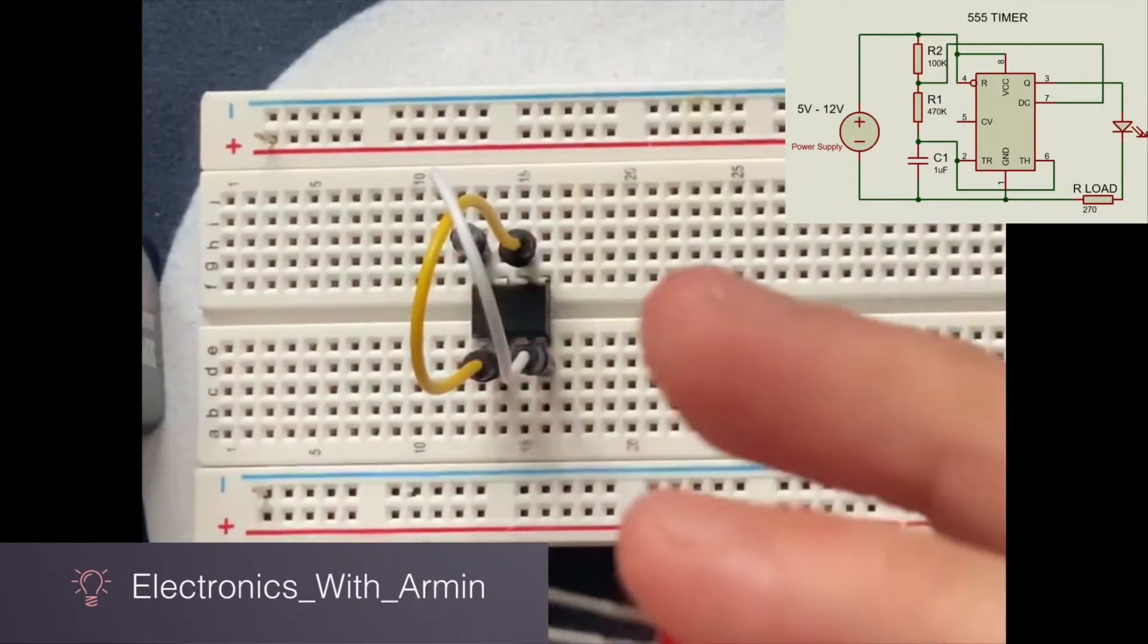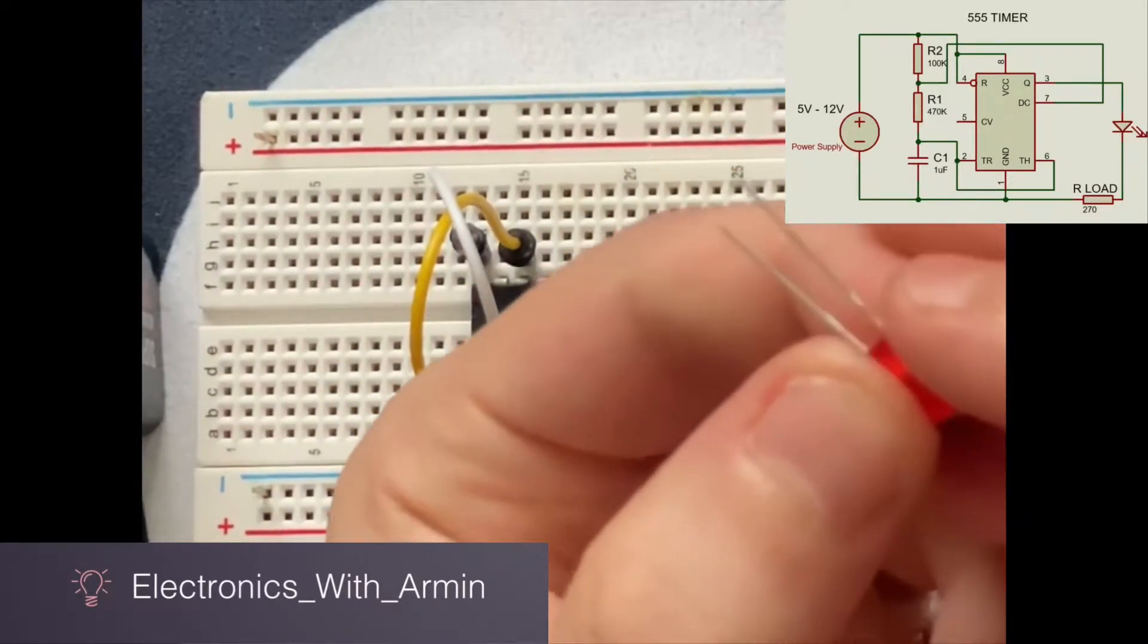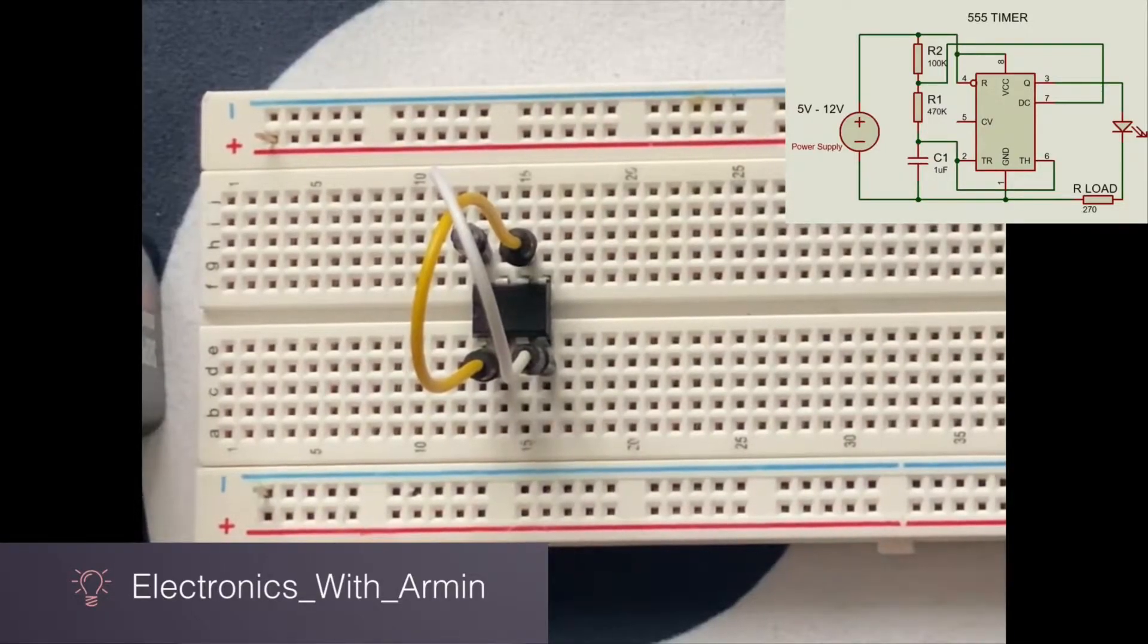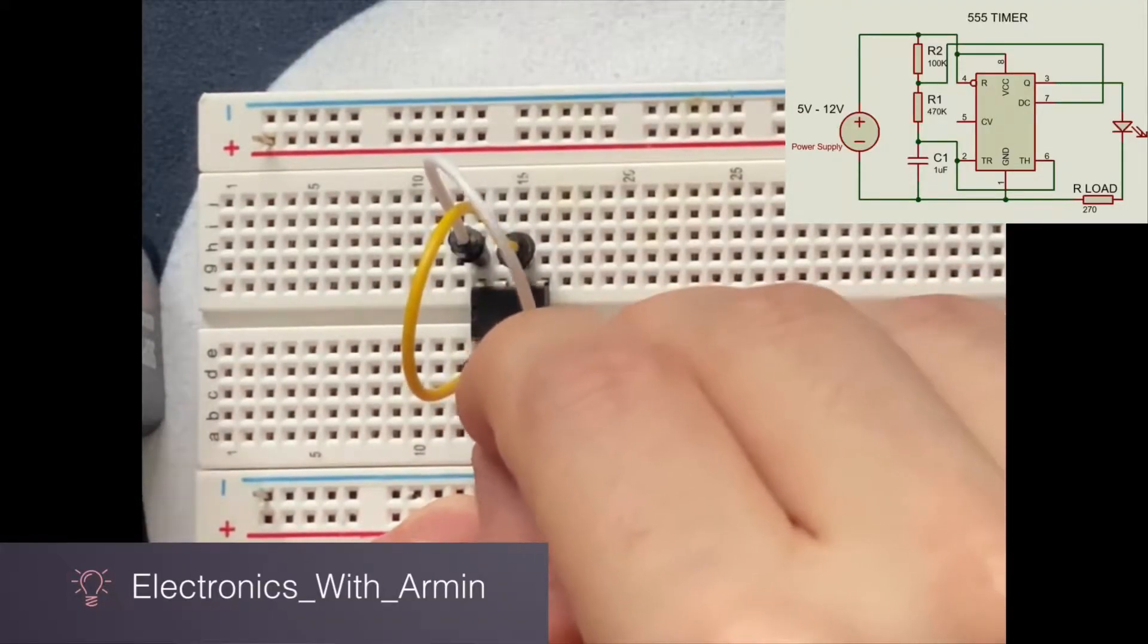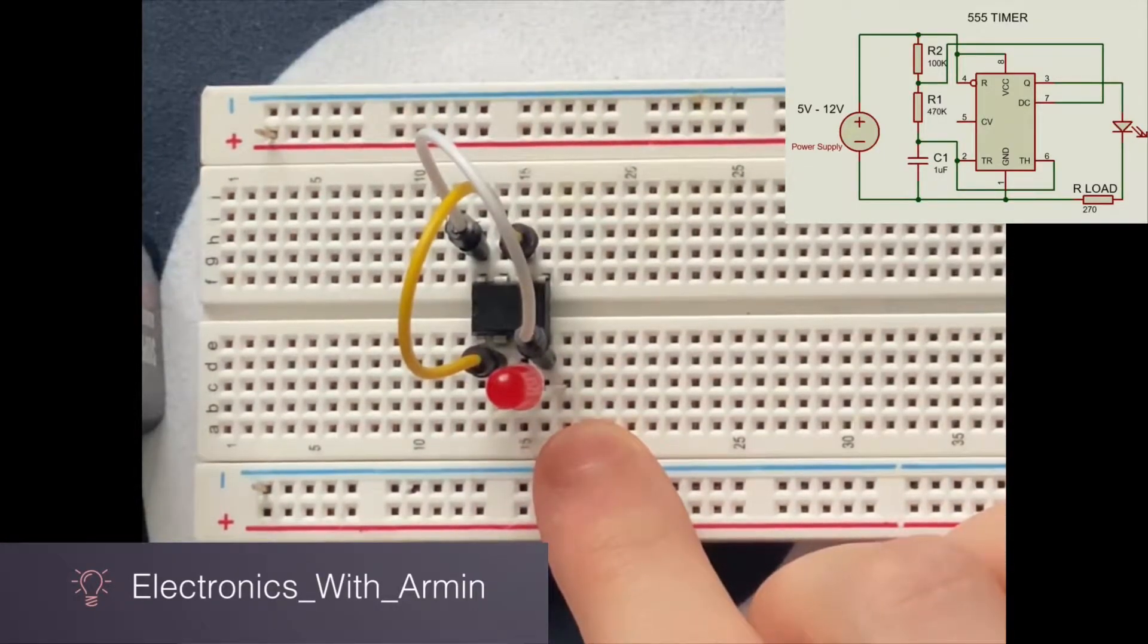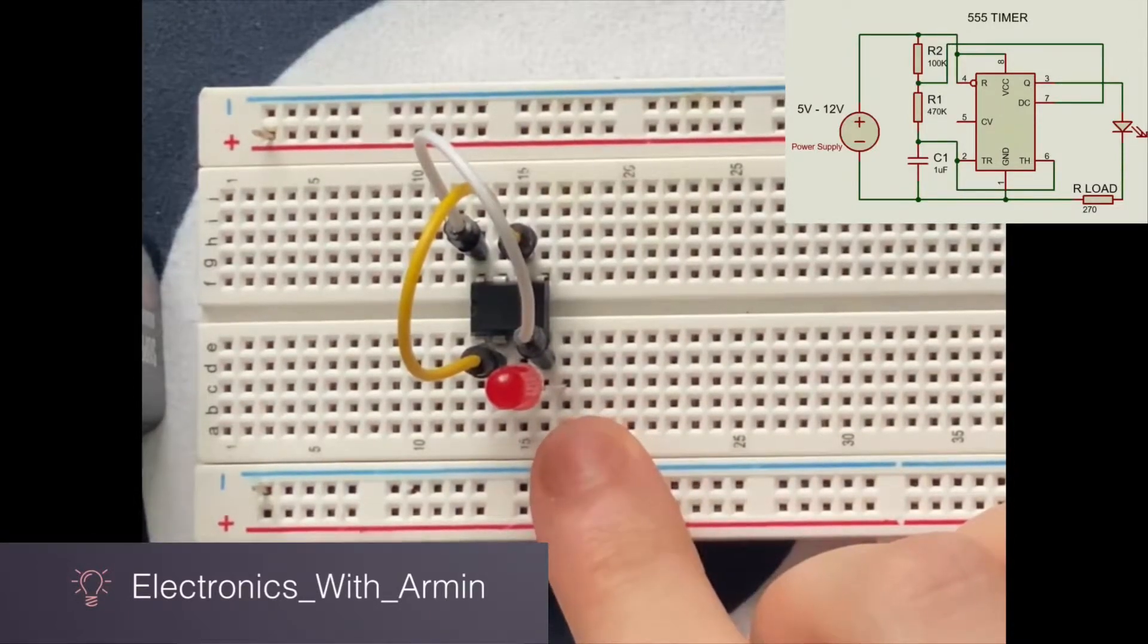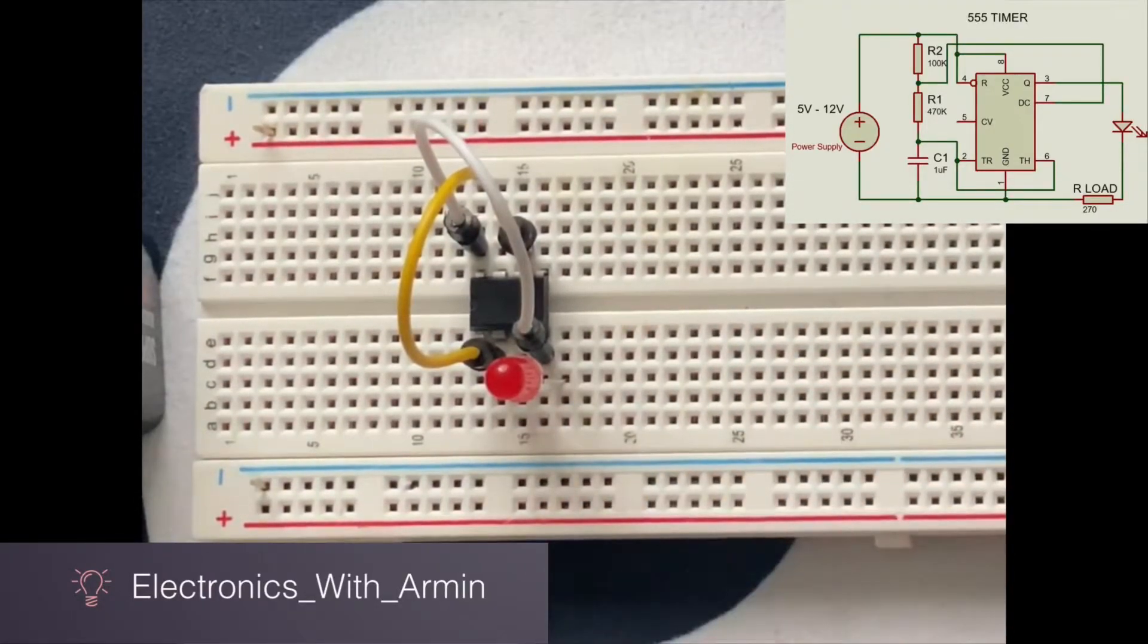Now I'm going to connect my LED to the circuit. For LED, the longer leg is always positive or anode. According to the diagram, the anode has to be connected to pin 3, so I'm going to connect the anode to pin 3 like this. Now for the cathode, the other leg of the LED, it should not connect to any pins of the IC, so I put the cathode one space apart from the IC.